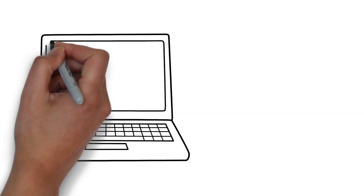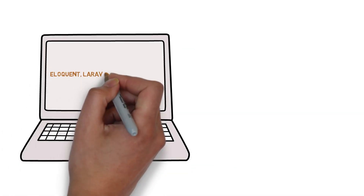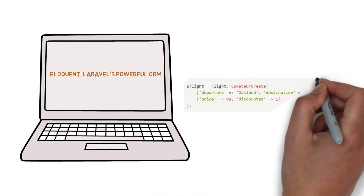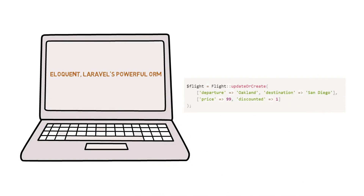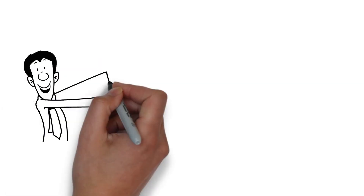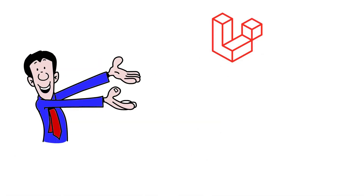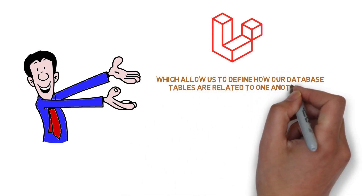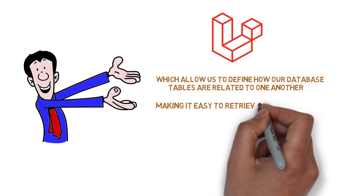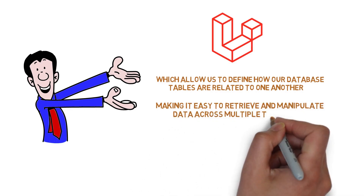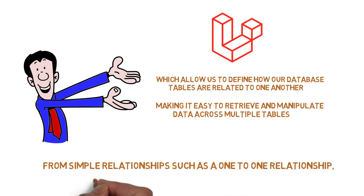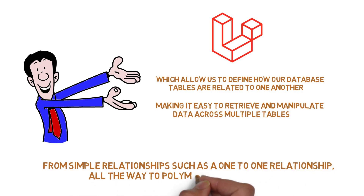From there we will move on to Eloquent, Laravel's powerful ORM, which allows us to interact with our database using intuitive object-oriented syntax. Since we're on the topic of Eloquent we will also explore relationships in Laravel, which allows us to define how our database tables are related to one another, making it easy to retrieve and manipulate data across multiple tables.